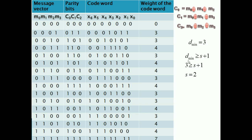From d_minimum equal to 3, the error detection and correction capacity can be determined. The relation d_minimum greater than or equal to S plus 1 gives S equal to 2, meaning this code can detect up to 2 errors. The relation d_minimum greater than or equal to 2T plus 1 gives T equal to 1, meaning this code can correct 1 error.